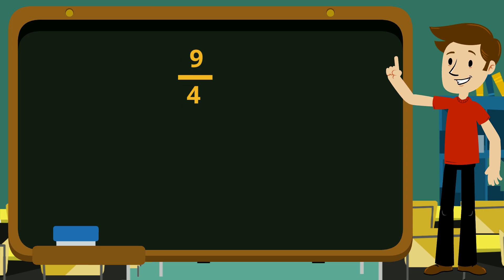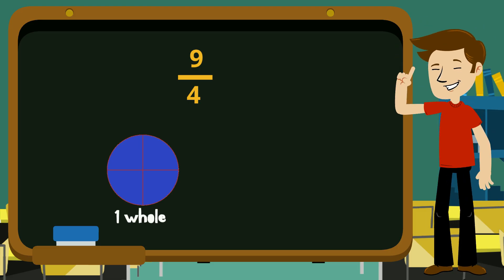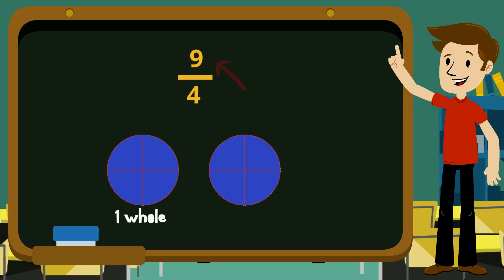Well, since we're working with quarters, we know that every time we have four of them, we have one whole. So by working out that there are two lots of four in nine, we know that our number must have two whole.